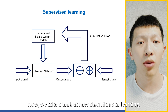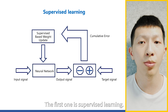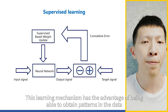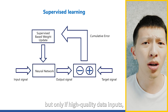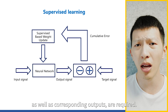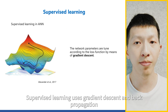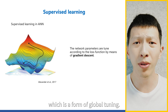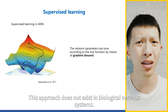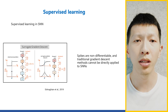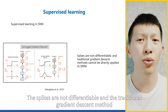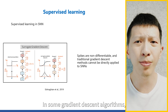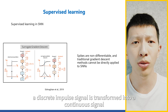Let's take a look at how algorithms learn. The first is supervised learning. It can obtain patterns in the data based on prior knowledge, but requires high-quality labeled data inputs with corresponding outputs. Supervised learning uses gradient descent and backpropagation to tune parameters inside the network — a form of global tuning. This approach does not exist in the biological nervous system. Moreover, spikes are not differentiable, so the traditional gradient descent method cannot be applied directly. In some algorithms, a discrete spiking signal is transformed into a continuous signal.